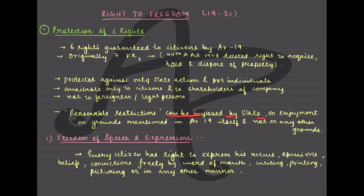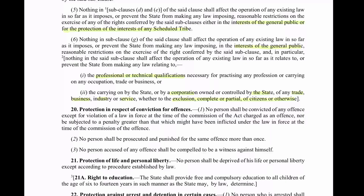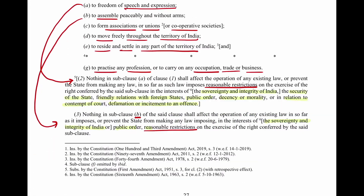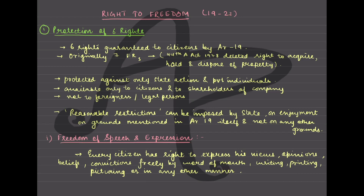You also know about the reasonable restrictions which can be imposed by the state on the grounds mentioned in Article 19 itself. Here is a prelims pointer: the reasonable restrictions for Article 19 are only those grounds given in Article 19 itself. Only those highlighted grounds are going to be allowed as reasonable restrictions for the six fundamental rights of freedom.